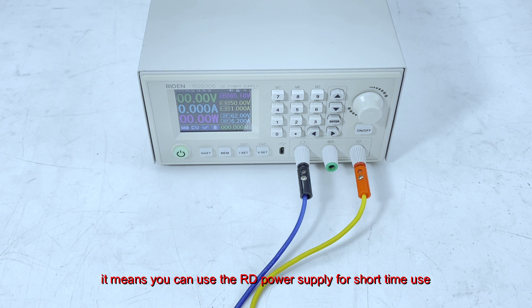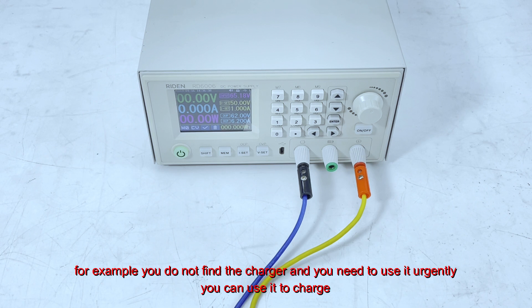It means that you can use RD power supply to charge the battery for a short time. For example, you do not find the charger and you need to use it urgently. So you can use it to charge the battery.